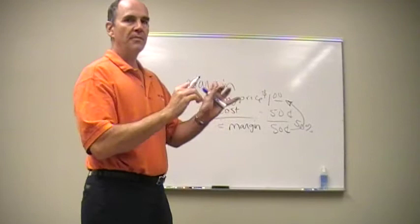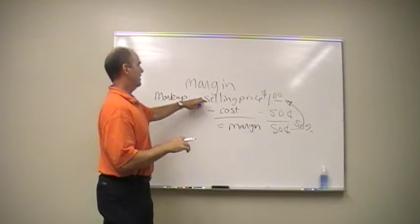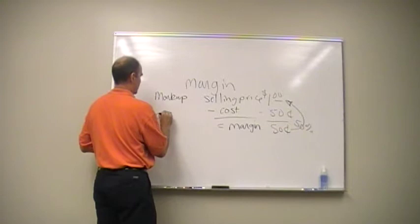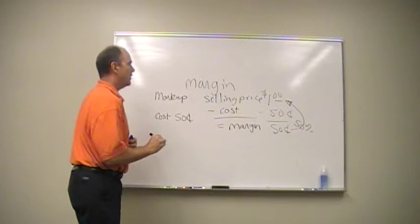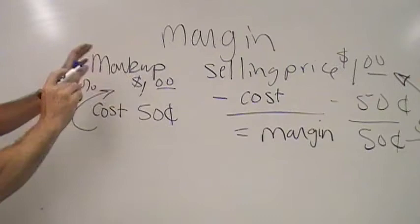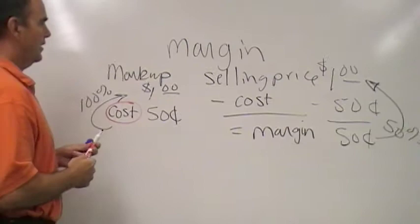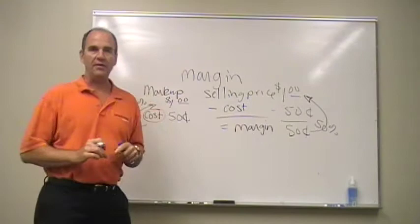Margin and markup are two different things. Now, we go to markup. Markup is the percent that the selling price is over your cost. So, let's say we buy something for cost at 50 cents, and we have a markup to a dollar. That markup is 100% because it's twice that. Markup always works off of cost. Margin is always involved down here, and it's a percentage of your selling price. They are two different things.